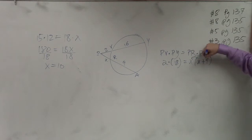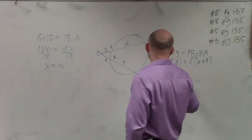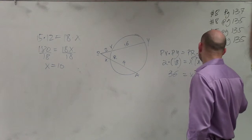Now I have to apply distributive property. So I get 36 equals X squared plus 9X.